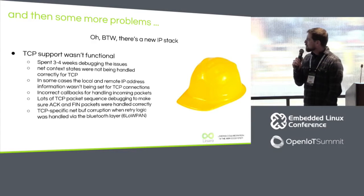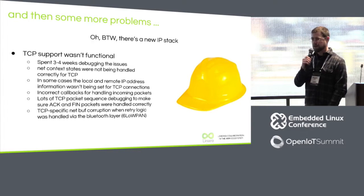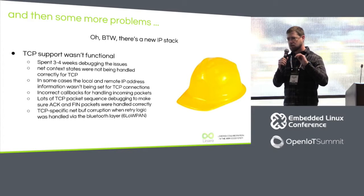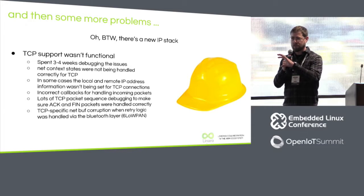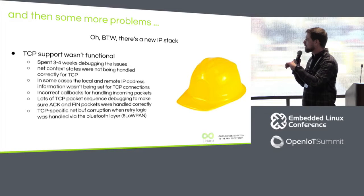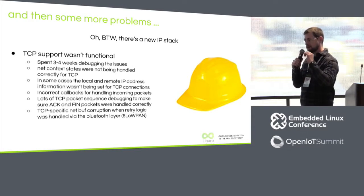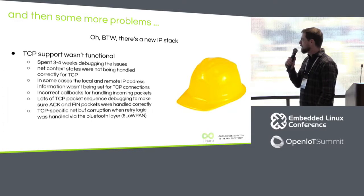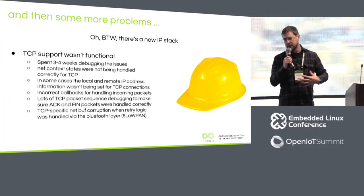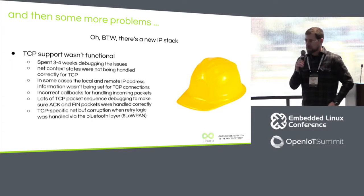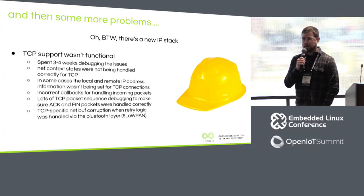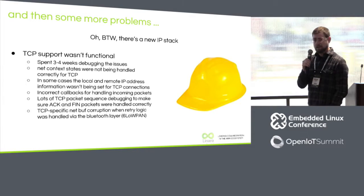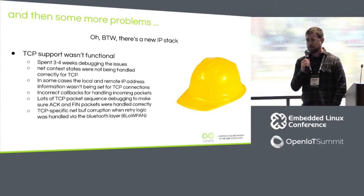Then came the new IP stack. We had a higher expectation of where the stack was going to be. When we jumped in, it just wasn't working — it wouldn't connect, states were wrong. We spent three to four weeks literally looking at TCP dumps, figuring out why things weren't connecting, adding our own tooling to figure out where the debugging was going. I'm pretty proud that we made some really good contributions to the IP stack — as open source citizens, that's the responsibility. We're on Zephyr 1.7 now and TCP is functional, in pretty good shape — a lot better than it was.